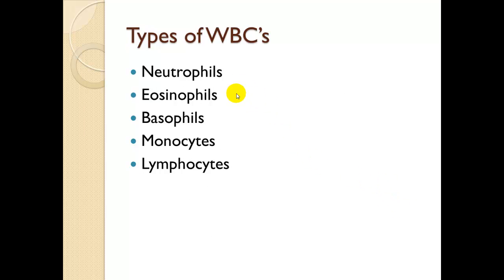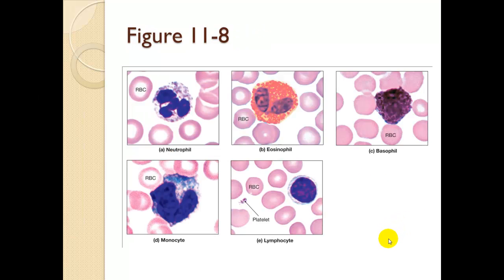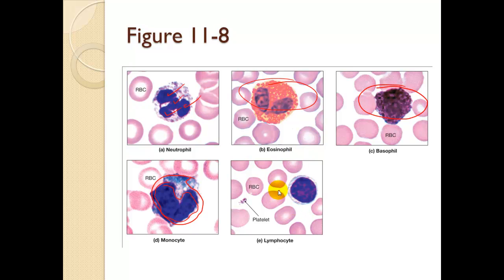The types of white blood cells are neutrophils, eosinophils, basophils, monocytes, and lymphocytes — all shown in figure 11-8. Neutrophils have multiple nuclei. Eosinophils stain red. Basophils stain blue. Monocytes are larger with a gigantic nucleus. Lymphocytes are not much bigger than a red blood cell and are mostly nucleus with very little cytoplasm.